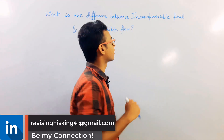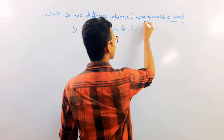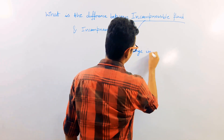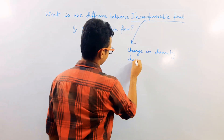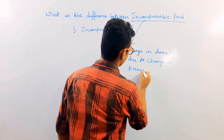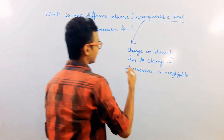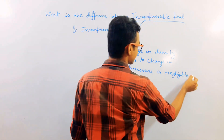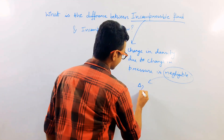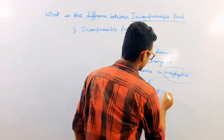Let us first discuss what is an incompressible fluid. A fluid for which the change in density due to change in pressure is negligible is termed as an incompressible fluid. The meaning of negligible here is that the ratio of change in density with respect to original density must be less than 5%.